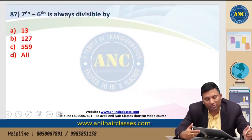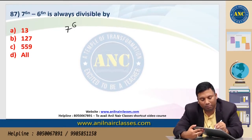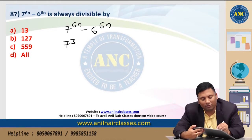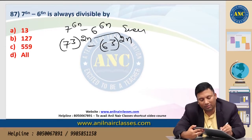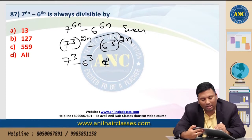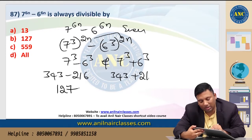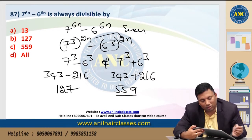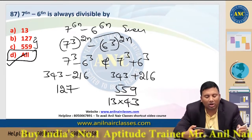First application: 7^(6n) minus 6^(6n) = (7^3)^(2n) minus (6^3)^(2n). Since the power 2n is even, it is divisible by both (a - b) and (a + b). So 343 minus 216 = 127, and 343 plus 216 = 559. It is divisible by both 127 and 559.